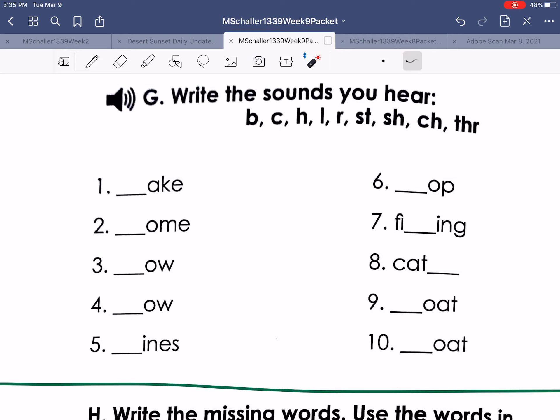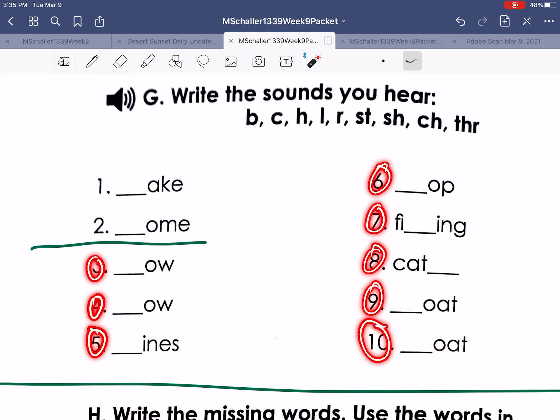Let's do, so I read the word, you listen and write the missing sound. Let's do numbers one and two together. And you do three, four, five, six, seven, eight, nine, and ten yourself.